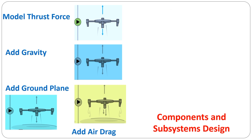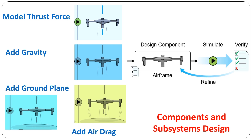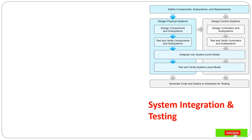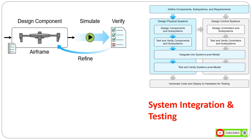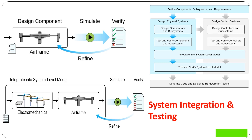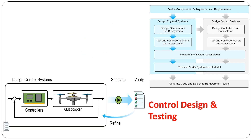System-level integration and testing: once our components and subsystems are designed and tested, we'll integrate them into a system-level model. The system-level model will serve as a virtual prototype of our quadcopter, enabling us to explore its capabilities and reveal limitations. We'll perform interactive and scenario-based tests to ensure it flies, and then use the model to evaluate our design options.